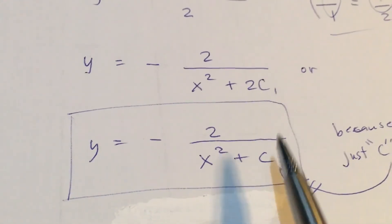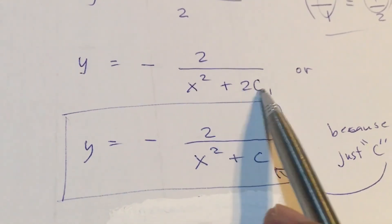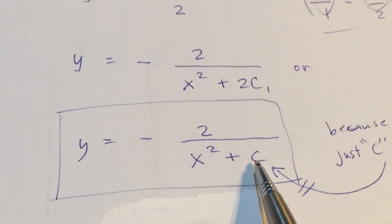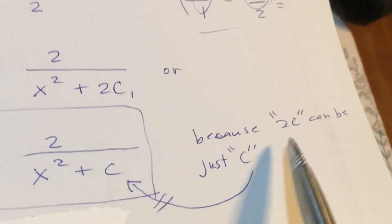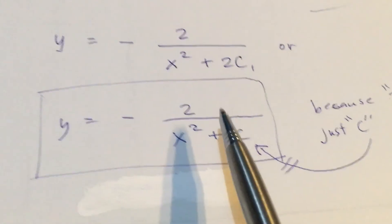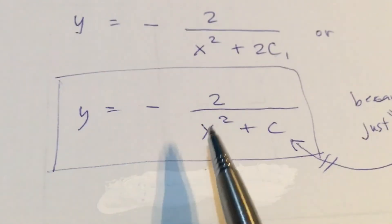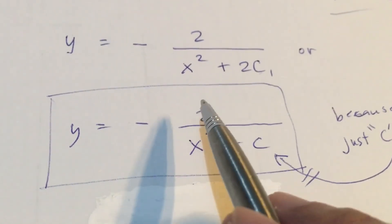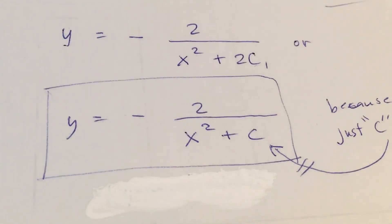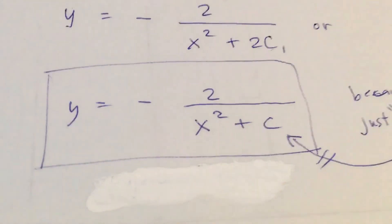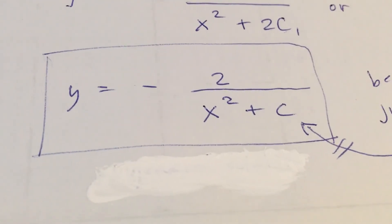And this is the final part of the discussion. You can just let this, instead of using 2C, you can just use C, because 2C can be just C. They are both constant. I hope this makes sense, and thanks for watching.